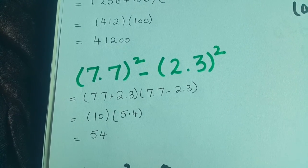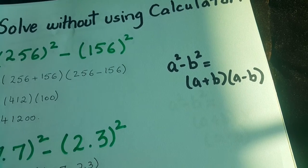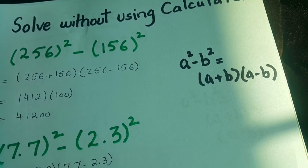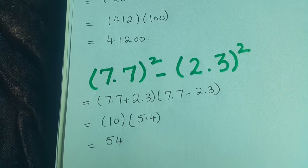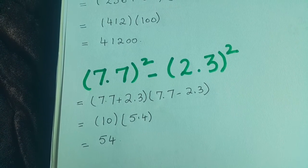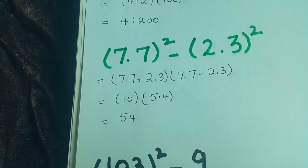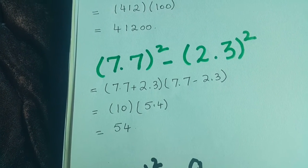Question number two is 7.7 squared minus 2.3 squared. Without using a calculator, how we will solve it? We will use the same formula: a squared minus b squared equals a plus b into a minus b. 7.7 plus 2.3 multiply by 7.7 minus 2.3.